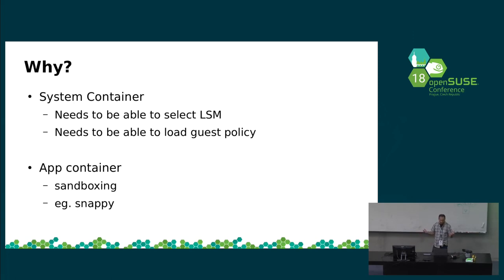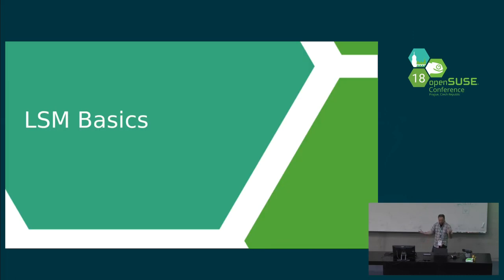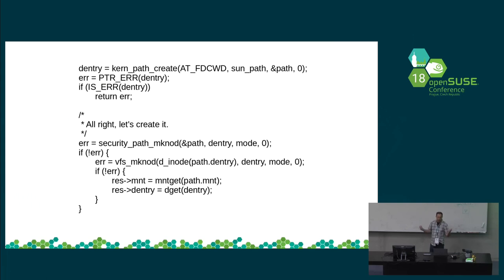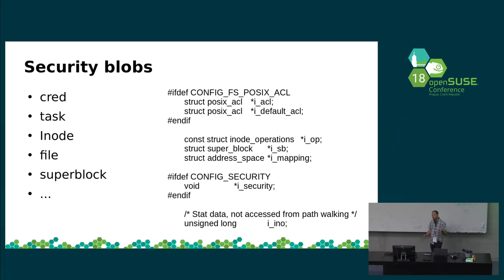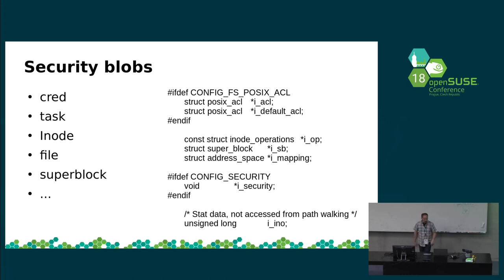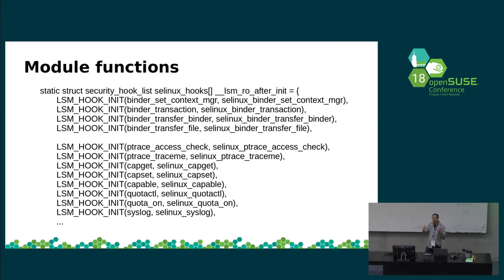So let's talk about how the LSM is set up. Basically in the kernel, we have some hook points scattered throughout the code that call into the LSM. In the security blobs — we have these security blobs — so in data structures like the iNode, the file, the task, the cred, the superblock, and several others, there's a void star pointer that the LSM module gets to manage, allocate, and give itself how much space it needs. When the LSM registers, it sets up a list of functions that are going to get called, and these get used by the hooks already in the code.